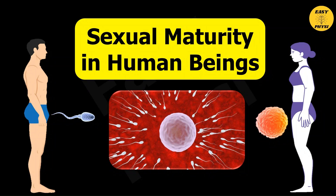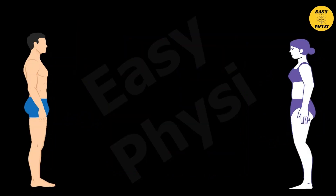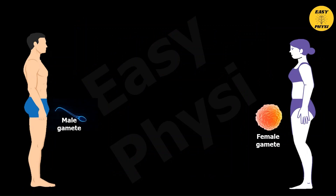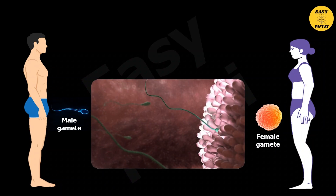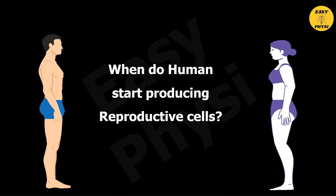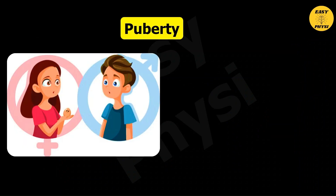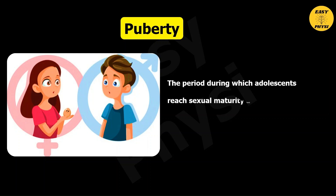Sexual Maturity in Human Beings. Humans reproduce by sexual method. In this method, the male reproductive cell fuses with the female reproductive cell. But when do males and females start producing reproductive cells? Humans start producing reproductive cells by the beginning of the period called puberty. The period during which adolescence creates sexual maturity and the individual becomes capable of reproduction is called puberty.